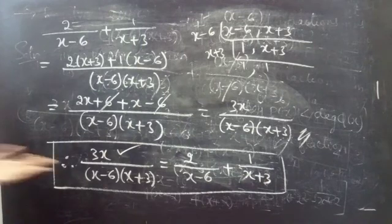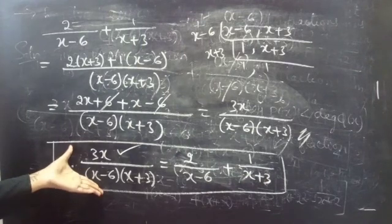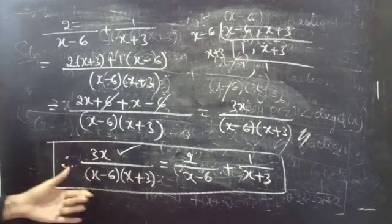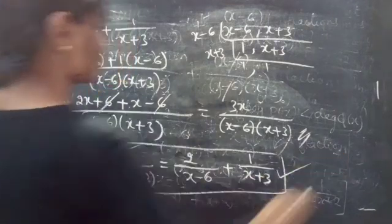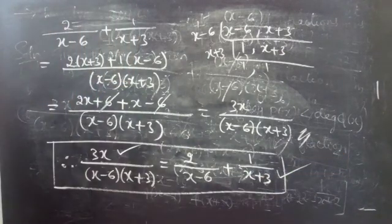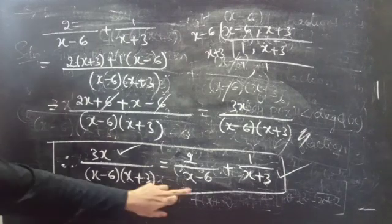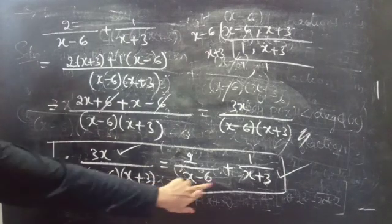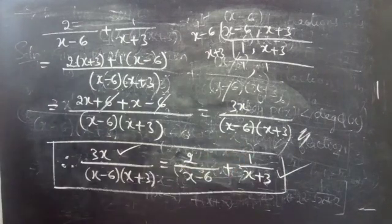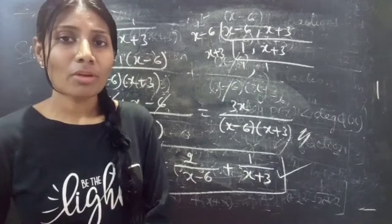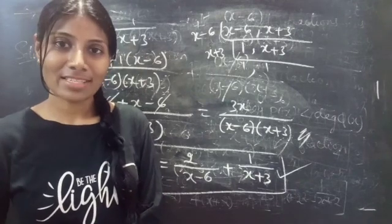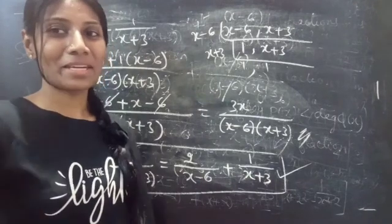So this is correct. The partial fraction of 3x by (x minus 6)(x plus 3) is 2 by (x minus 6) plus 1 by (x plus 3). This is our correct answer. We have seen a problem from partial fractions in this video — hope you understand. We will see you in the next video. Bye-bye.